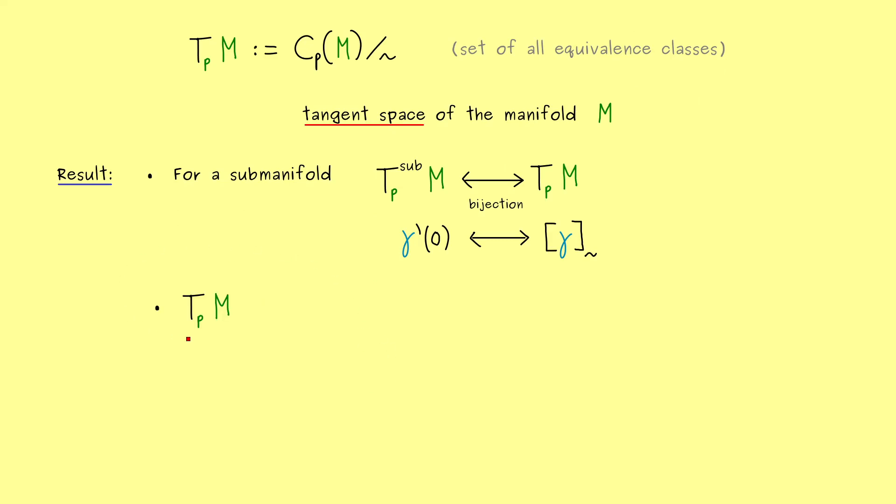Now one crucial fact is still missing here, because we want that this new tangent space is also a vector space. For the submanifolds, this one was a subspace in R^n, but now what about the new tangent space here? Of course, it's also a vector space, but we have to talk about the operations in it. So what we need is an addition and a scalar multiplication. Indeed, for being a vector space, we need to know how to add vectors and how to scale them. So exactly these two operations have to be well defined.